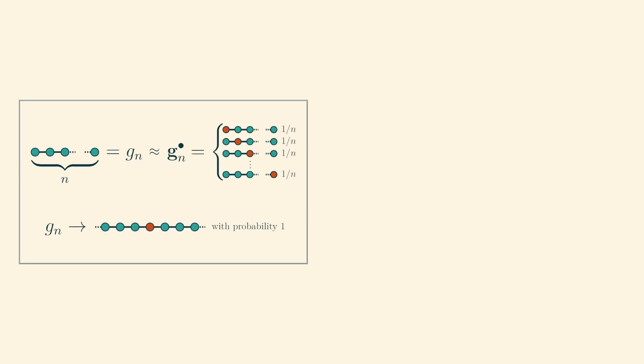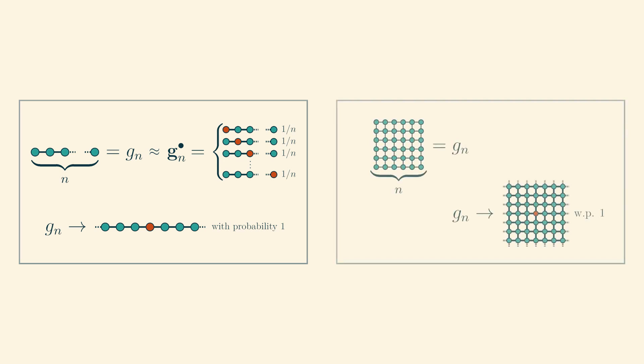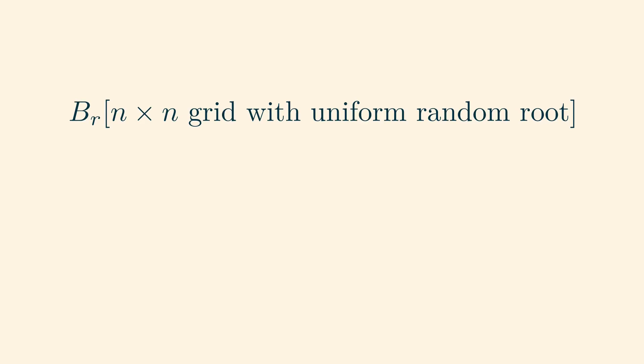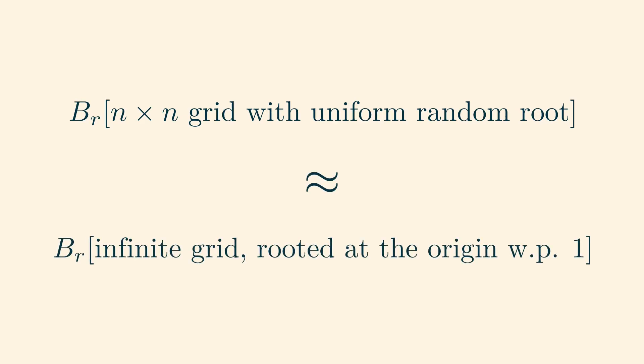The limit of the sequence of finite path graphs is an infinite path graph, rooted in the middle, with probability 1. And the limit of the finite grid graphs is an infinite grid graph, again rooted in the middle, with probability 1. This is because the balls in the grid graph mostly look like the ball around the origin in the infinite grid.